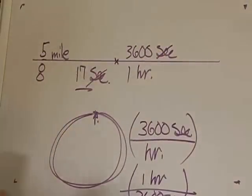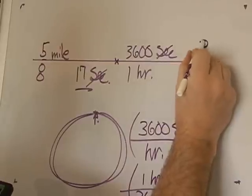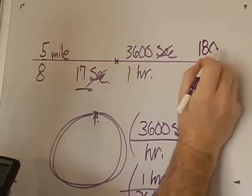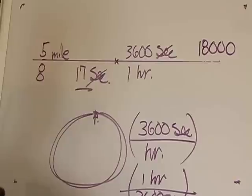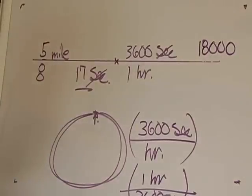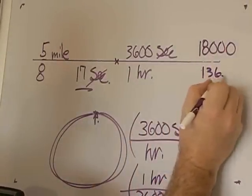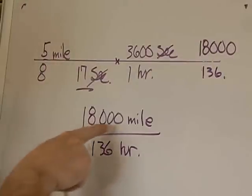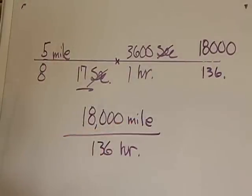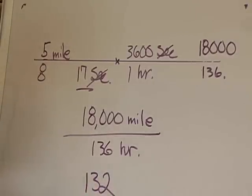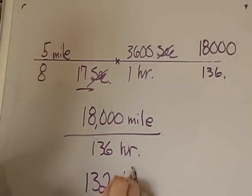So now we do the math: 5 times 3600, and 8 times 17. Five times 3600 is 18,000, and the units left on top would be miles. Then 8 times 17 times 1 across the bottom turns into 136, and the units would be hours. So it's 18,000 miles divided by 136 hours, and if you divide it out, it turns out to be 132 miles per hour.